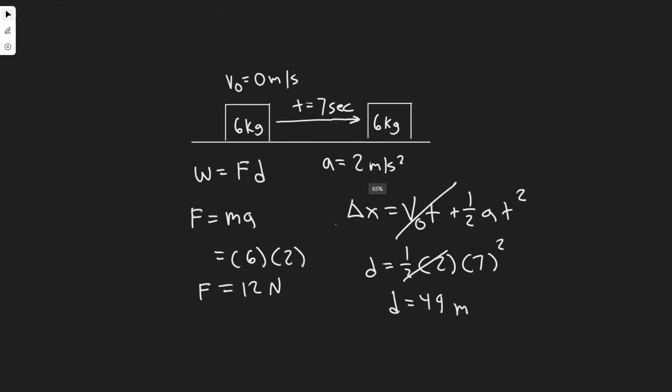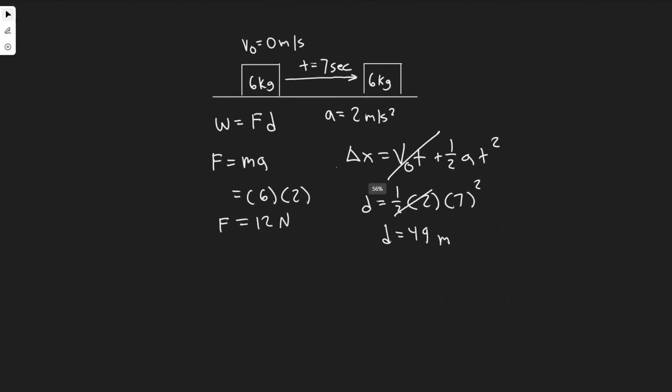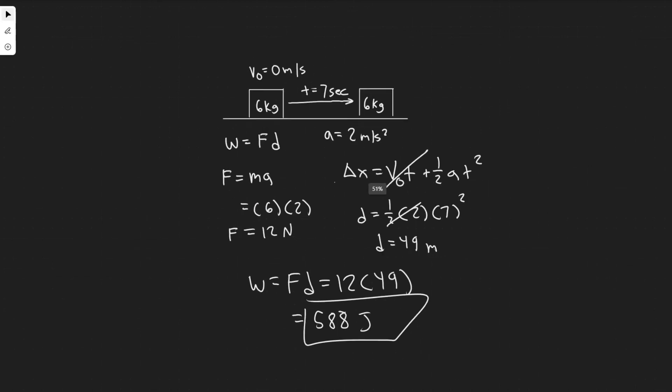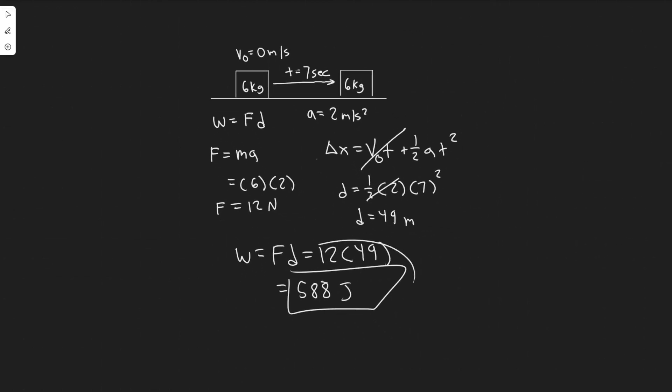Now we know the force and the distance, so we can just multiply. It's just that simple. Work equals force times distance or 12 newtons times 49 meters. Go ahead and multiply that out. 12 times 49. You're going to get 588. Keep in mind, work is measured in joules. So 588 joules, that's going to be the net work done on this box. This right here is going to be your answer and hopefully you found this useful.